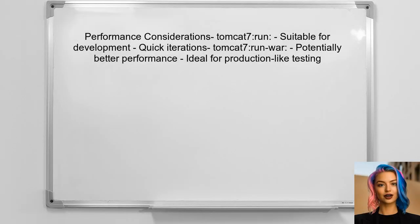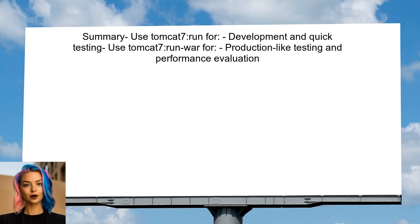In terms of performance, running a packaged application can sometimes yield better results, especially if the application has been optimized for production. However, for development purposes, Tomcat 7 Run is often sufficient. In summary, choose Tomcat 7 Run for development and quick testing, while Tomcat 7 Run War is better for simulating a production environment and ensuring the application runs as expected.